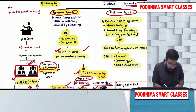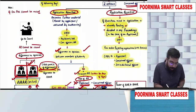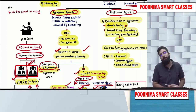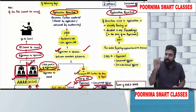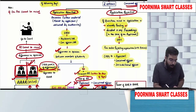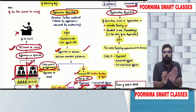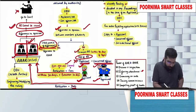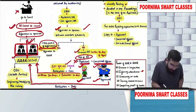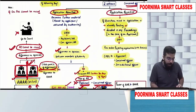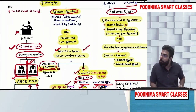If the members of AAAR have a difference of opinion, an advance ruling cannot be given. The applicant has the option to go to the court. However, for exam purposes, you just need to write: if there is a difference of opinion between the appellate authority members, then advance ruling cannot be issued.